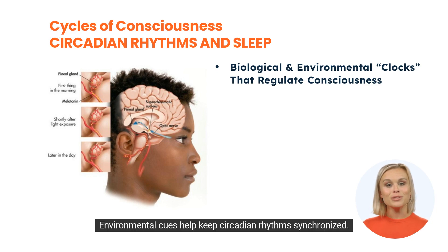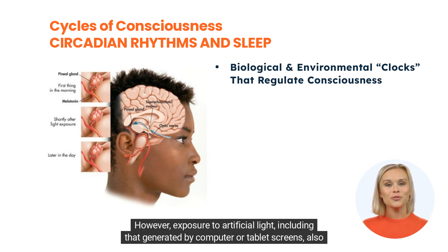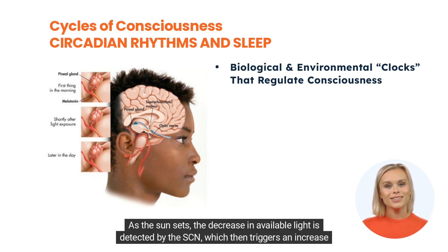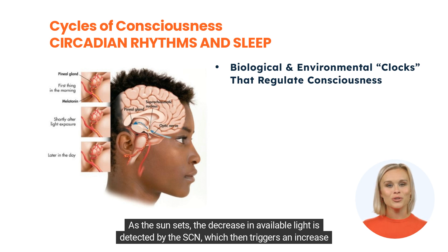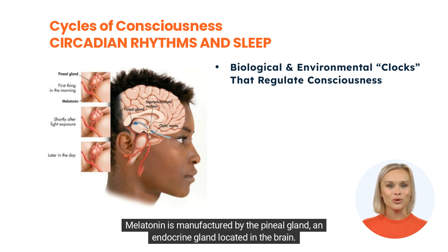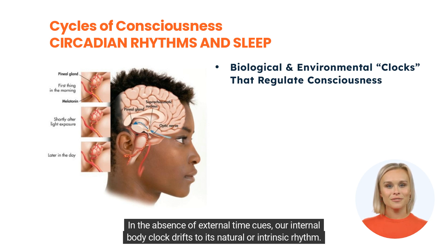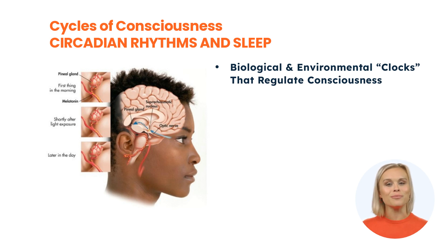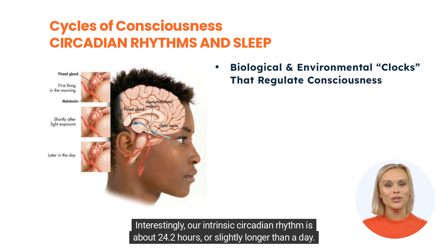This cluster of neurons is called the suprachiasmatic nucleus, abbreviated SCN. Environmental cues help keep circadian rhythms synchronized, and the most important environmental cue is sunlight. However, exposure to artificial light, including that generated by computer or tablet screens, also influences circadian rhythms. As the sun sets, the decrease in available light is detected by the SCN, which then triggers an increase in the production of a hormone called melatonin. Melatonin is manufactured by the pineal gland, an endocrine gland located in the brain. In the absence of external time cues, our internal body clock drifts to its natural or intrinsic rhythm. Interestingly, our intrinsic circadian rhythm is about 24.2 hours, or slightly longer than a day.